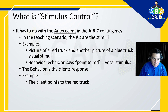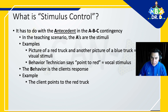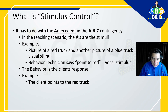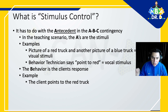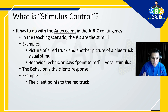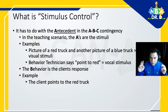Stimulus control has to do with the antecedent in the ABC contingency — really focusing on the A of the ABC contingency. In a teaching scenario, the A's are the stimuli. For example, a picture of a red truck and another picture of a blue truck are the visual stimuli — those are the antecedents.